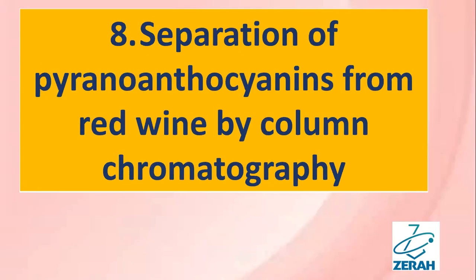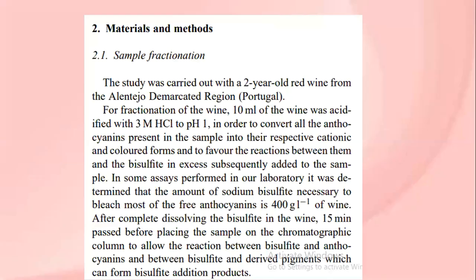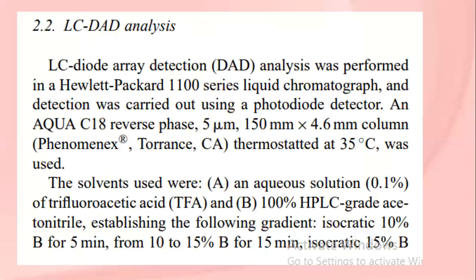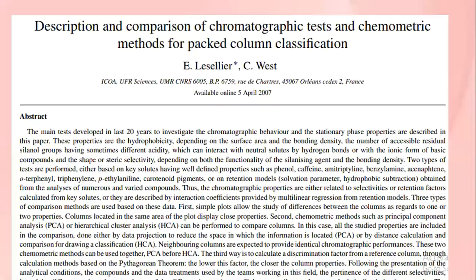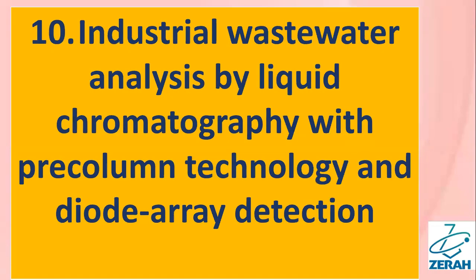The next analytical chemistry project topic is separation of pyranone and anthocyanins from red wine by column chromatography. This is followed by a description and comparison of chromatographic tests and chemometric methods for column classification.